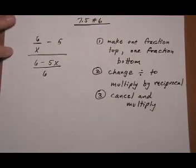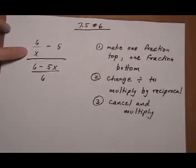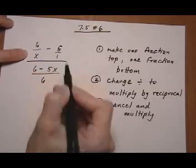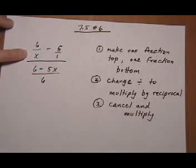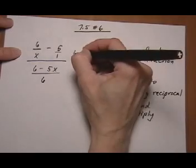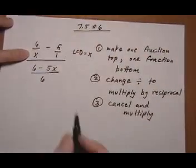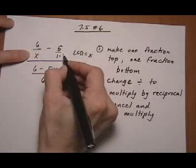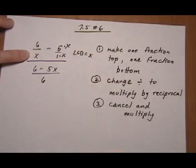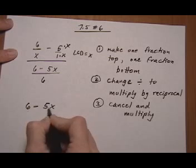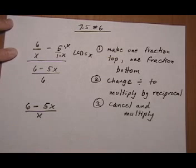Alright, so let's go ahead and do it. The top one. If we want to make one fraction, think of the five as five over one. And we have an LCD. So this one needs to be times x. Top and bottom. And that gives us six take away five x over x on top.